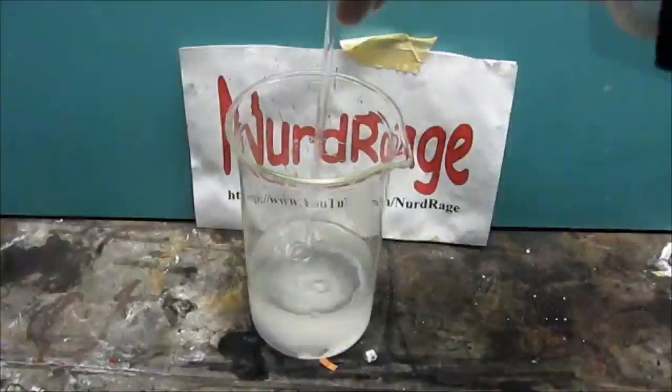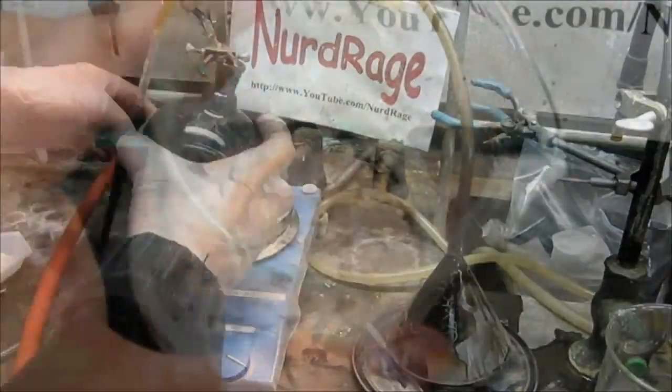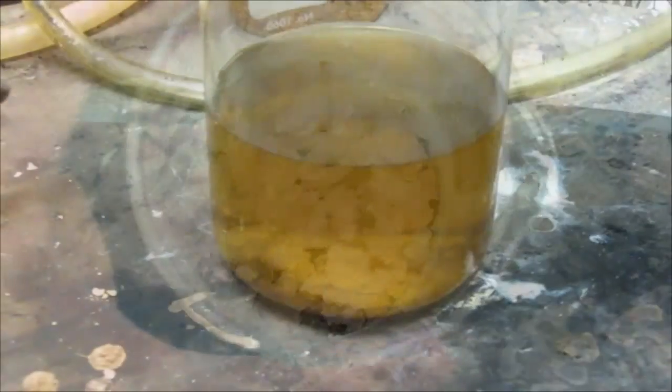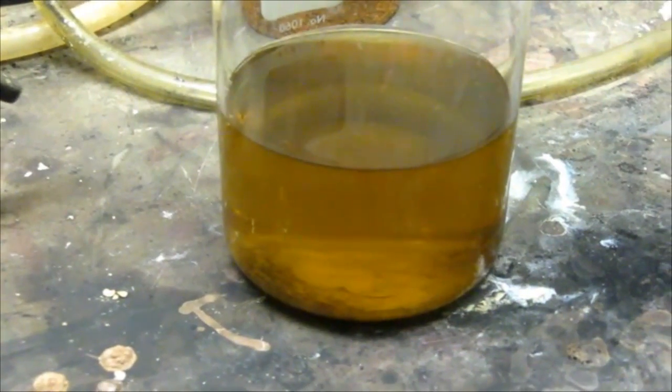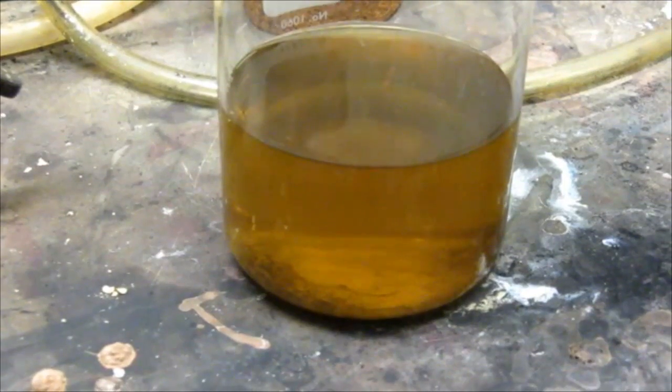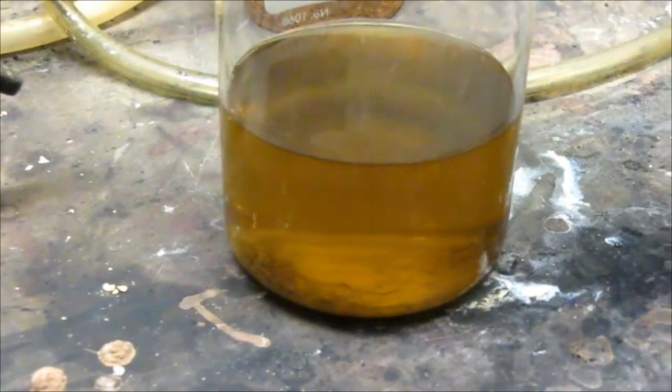Greetings fellow nerds. In a previous video I made manganese sulfate but had a situation where iron in the precursor would carry over and contaminate the product. Recrystallization doesn't work for this high level of contamination, so we need a different approach to purifying this.